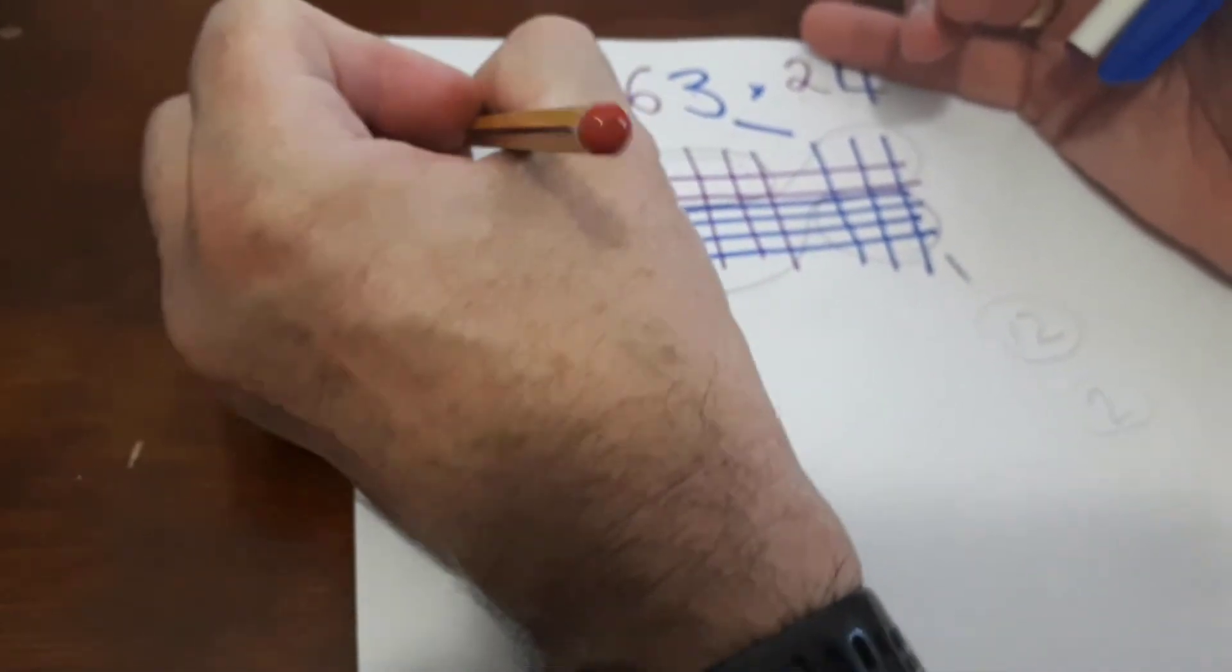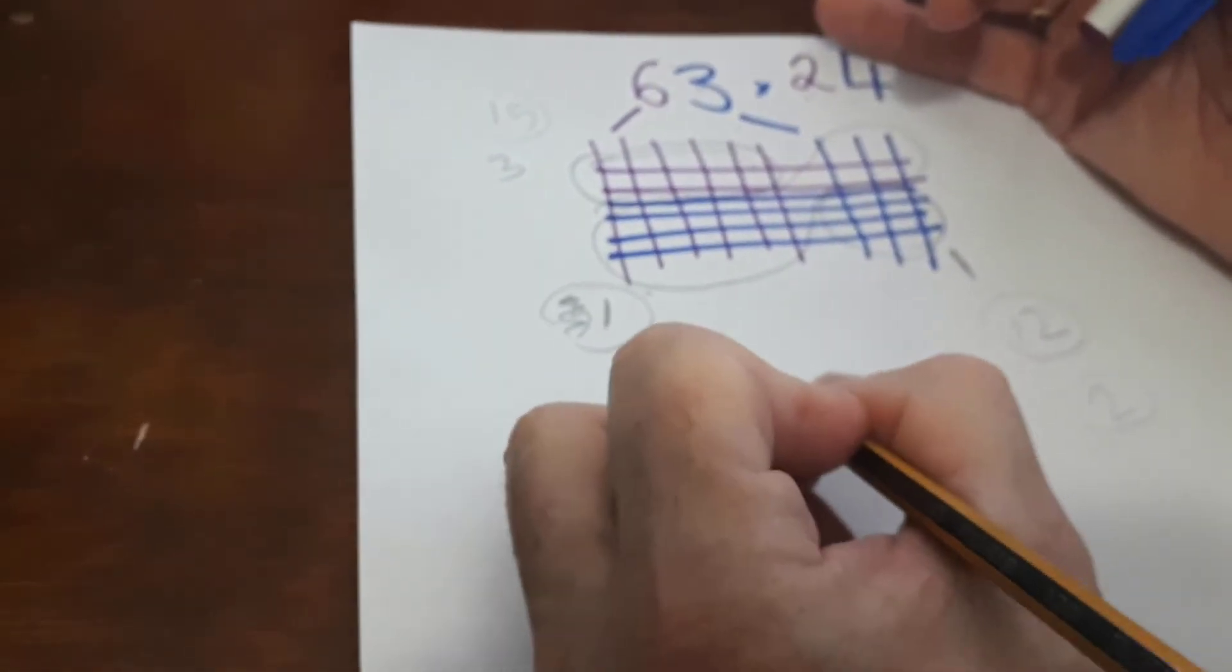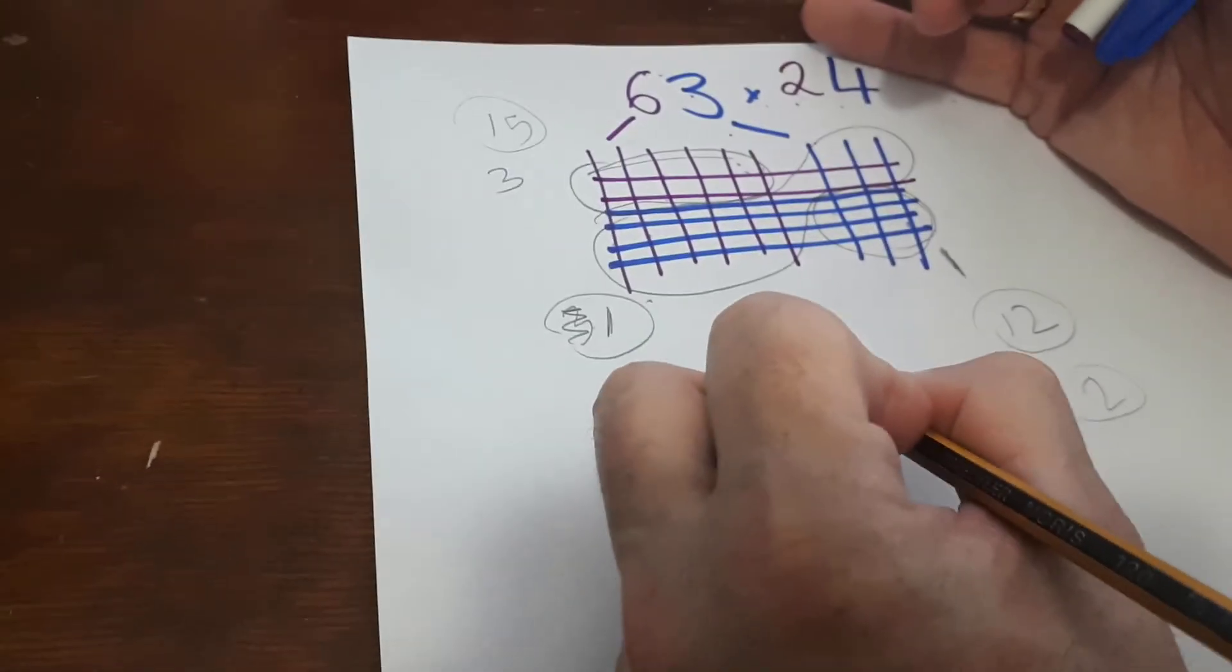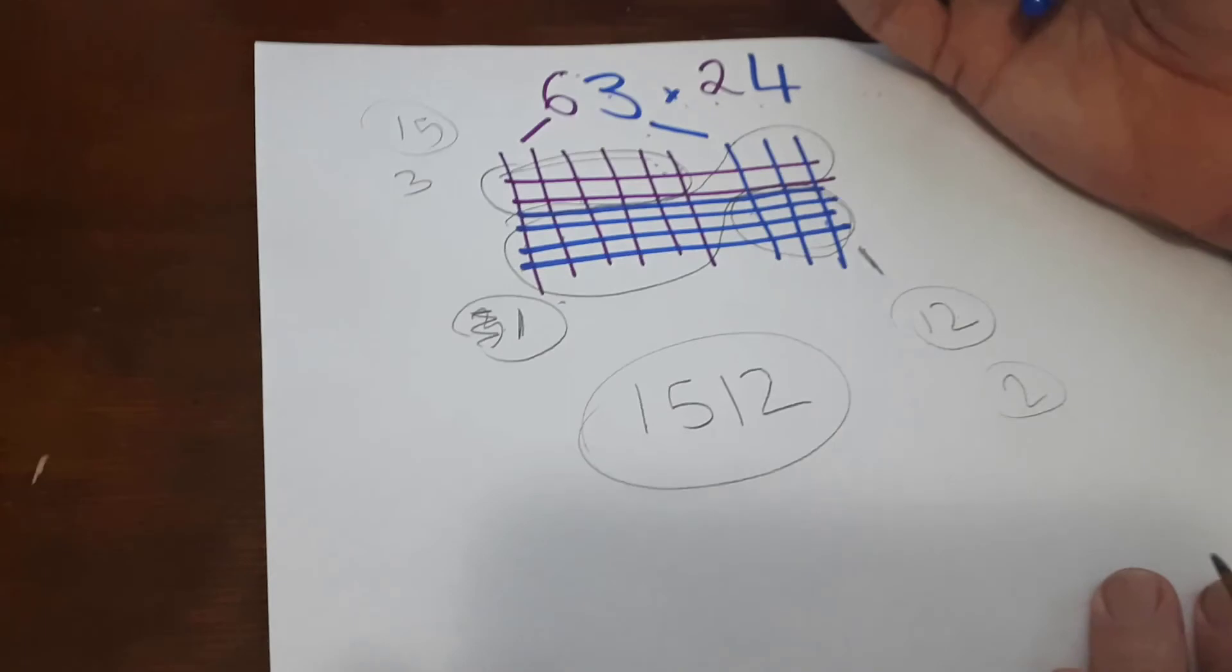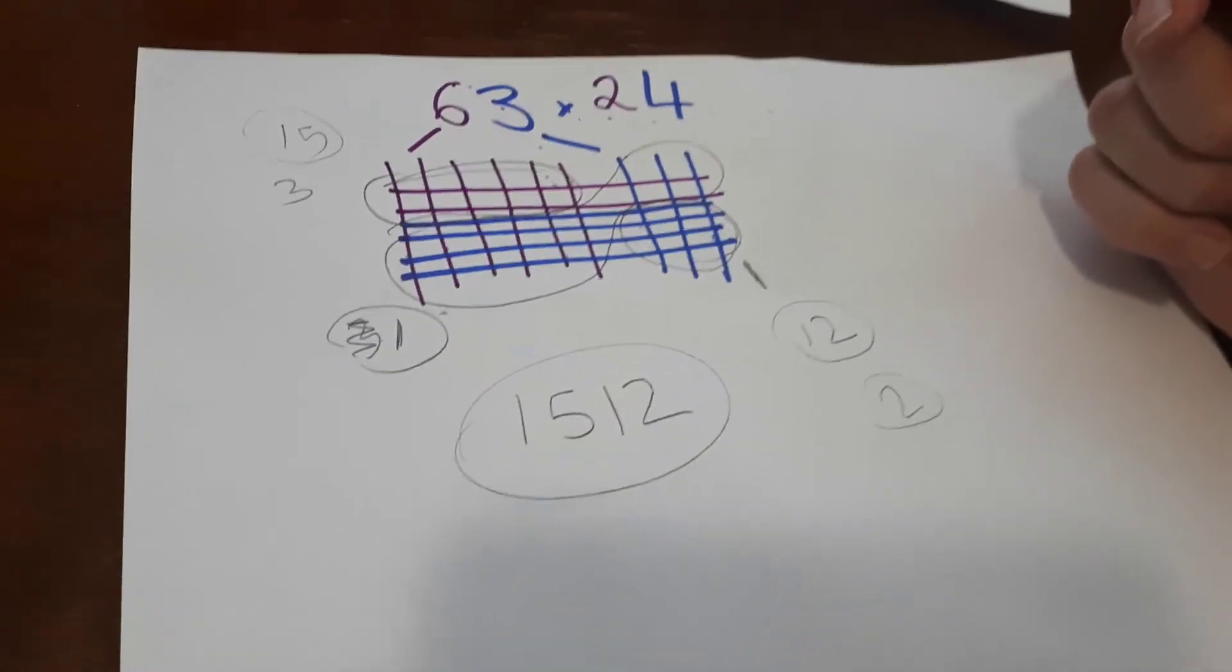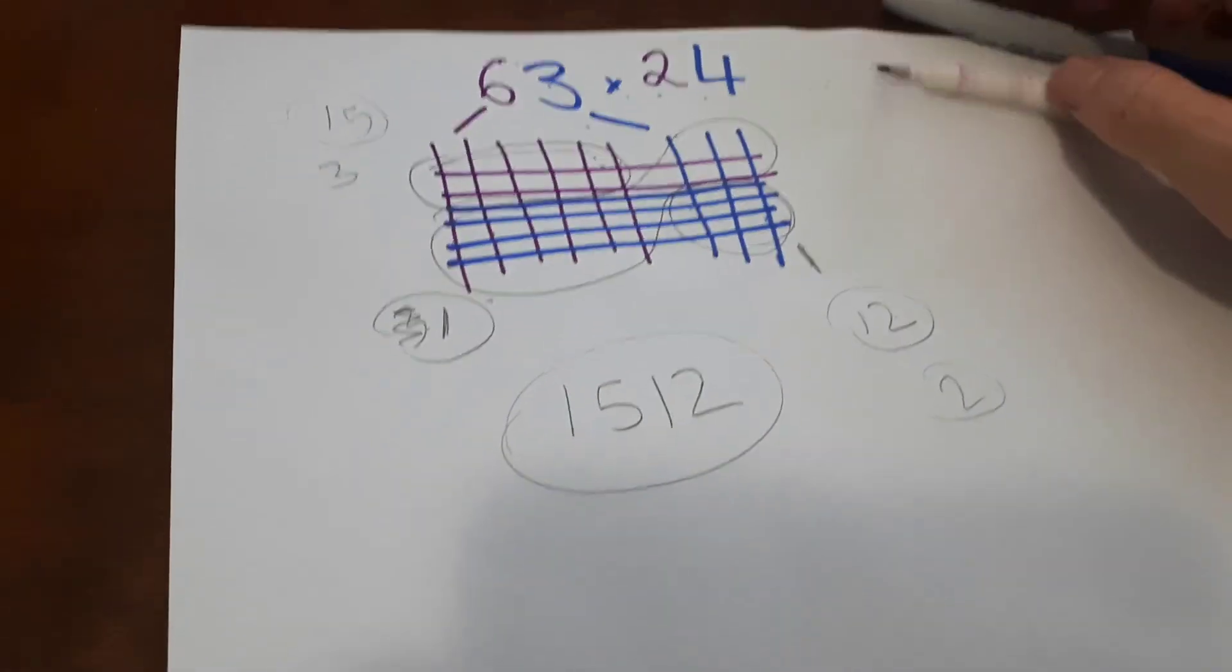So we've got fifteen here. So we've got one, five, one, two. That's right. How do you know that's right? Because I worked out what you were doing.